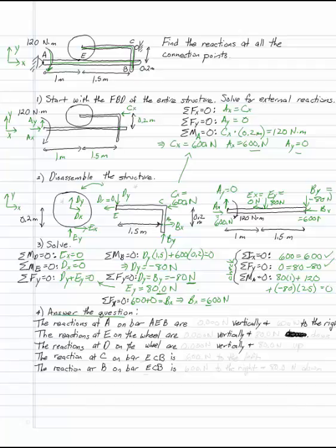Don't forget to do that. I'm going to answer the questions with things like this. The reactions at A on bar AEB. I have to say which part I'm talking about because unless I'm dealing with an external reaction, I need to know whether it's this equal and opposite one or this equal and opposite one. Which bar are you talking about? So on AEB I have 0.000 newtons vertically and 600 newtons to the right.